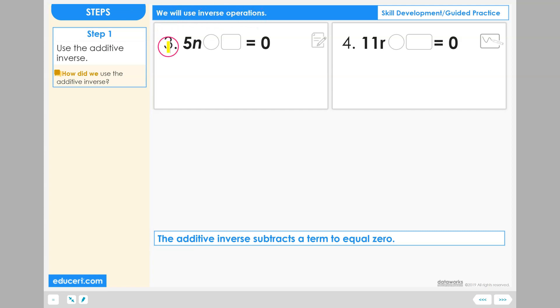Let's use inverse operations on problem number three. We have the variable term 5n. 5 is the coefficient, n is the variable. We want to remove all of the term so that it equals zero.